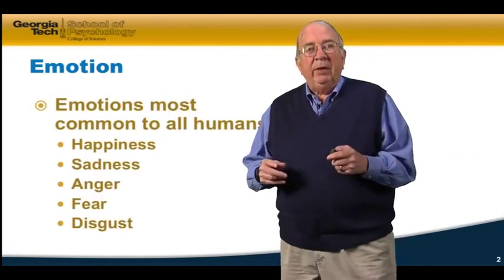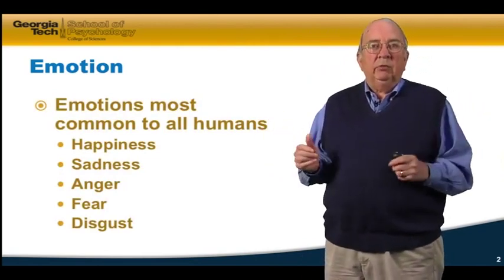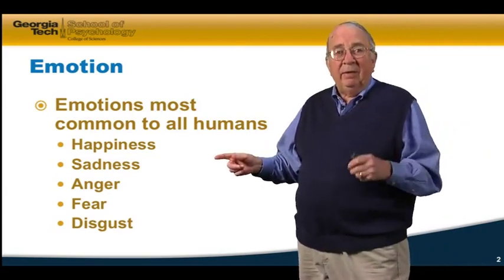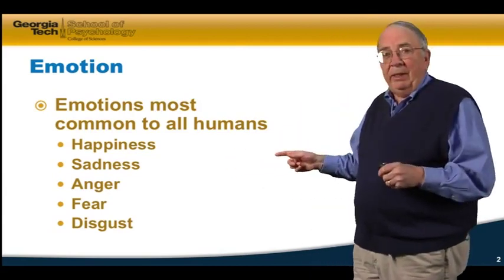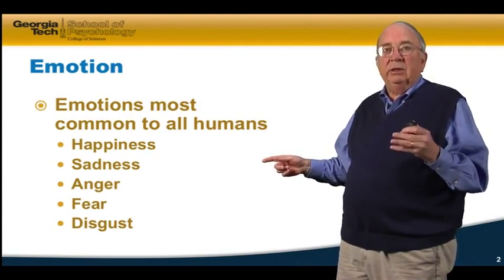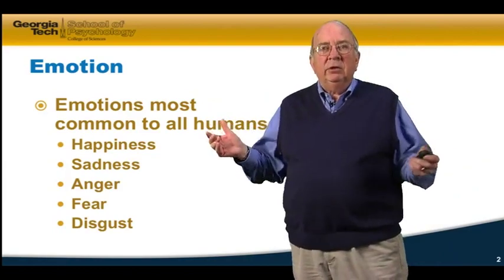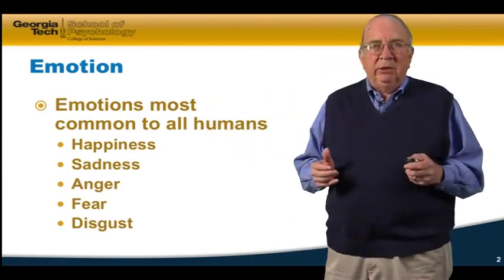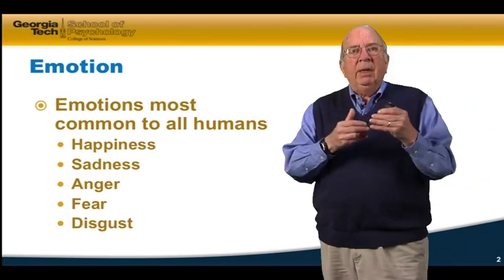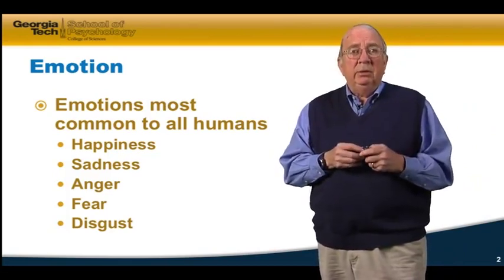Some people believe that the emotions most common to all humans — the ones that we all experience regardless of our culture — sort of the basic five, are happiness, sadness, anger, fear, and disgust. But there obviously are many other emotions that we produce, and there's been an attempt by psychologists to categorize how we understand emotion.